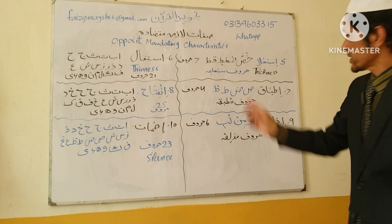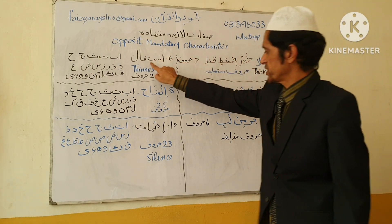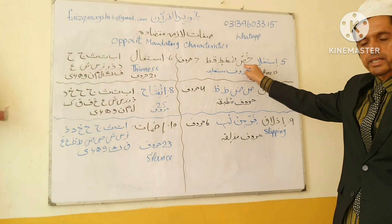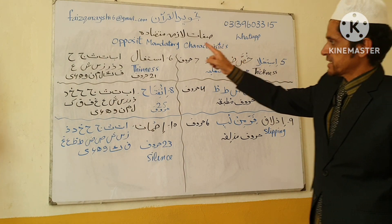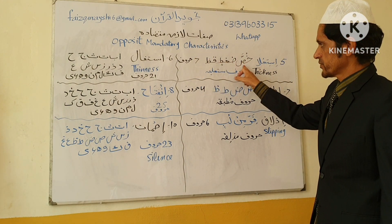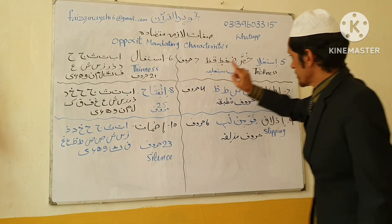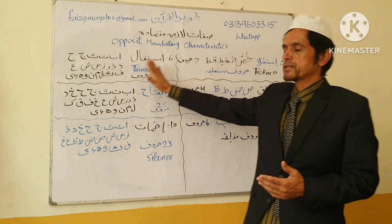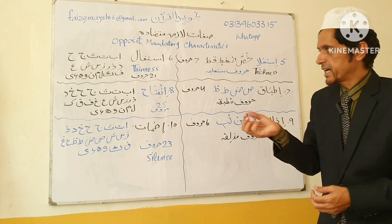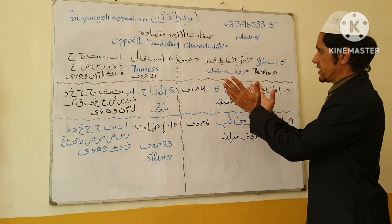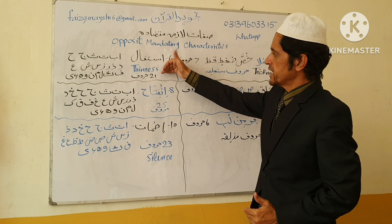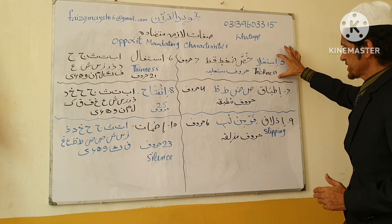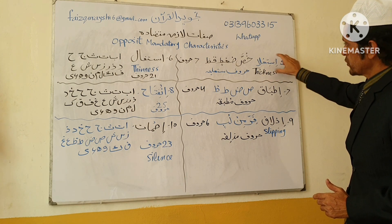We have six characteristics, but two are opposite of each other — this one to this one, this one to this one. It means if you find Isti'ala in Swat, you will not find Istifal in Swat. Because if here is Isti'ala (thickness) in Swat, there will not be Istifal (thinness) in Swat. They are opposite of each other — if here is Isti'ala, in those other letters will be Istifal.